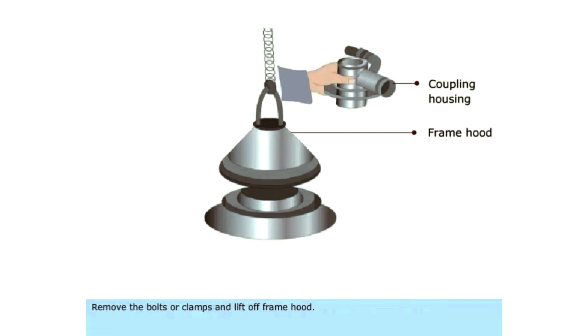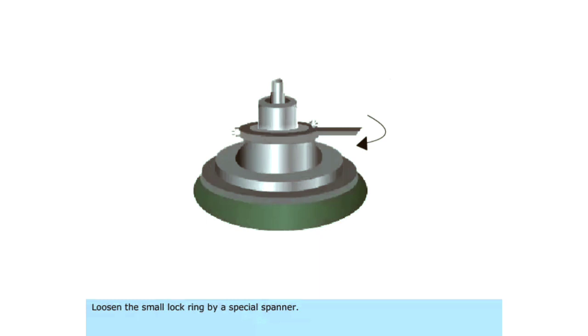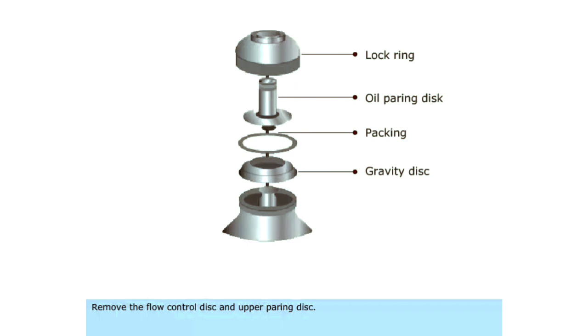Remove the bolts or clamps and lift off frame hood. Loosen the small lock ring by a special spanner. Remove the flow control disc and upper pairing disc.